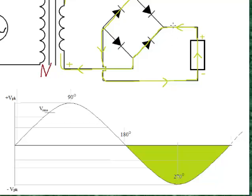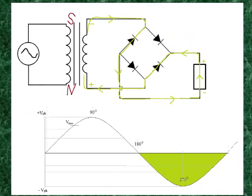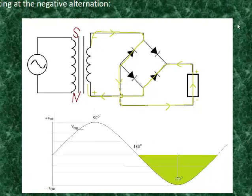The way to get rid of that pulsing would be to tie a capacitor in parallel. The capacitor would try to maintain the peak voltage, as it would store a charge temporarily. Those are called filter caps. There are many different designs for power supplies, but this is one example.